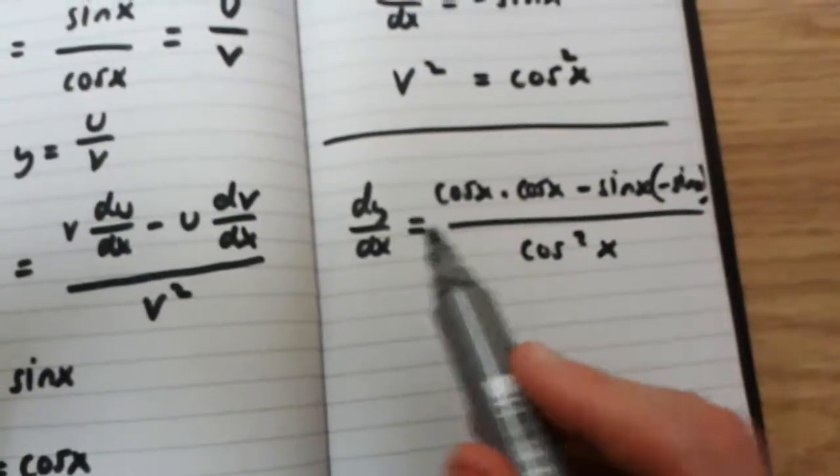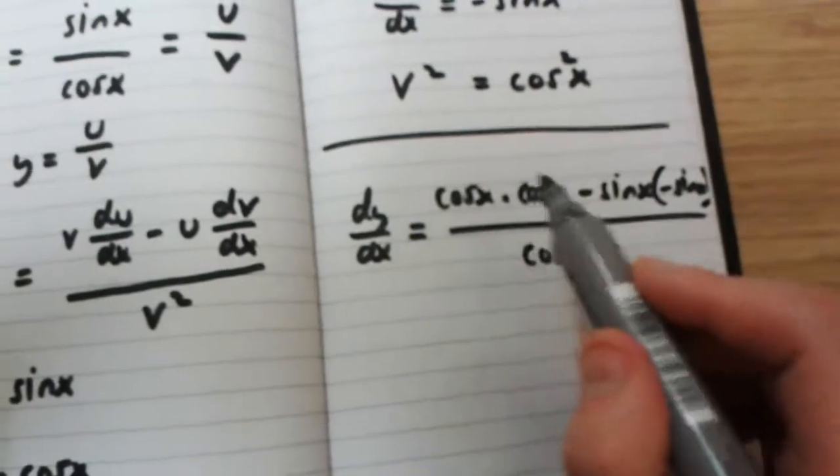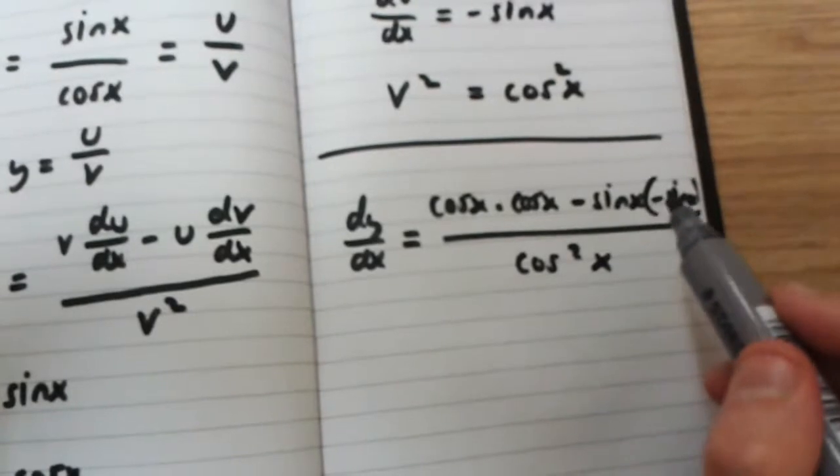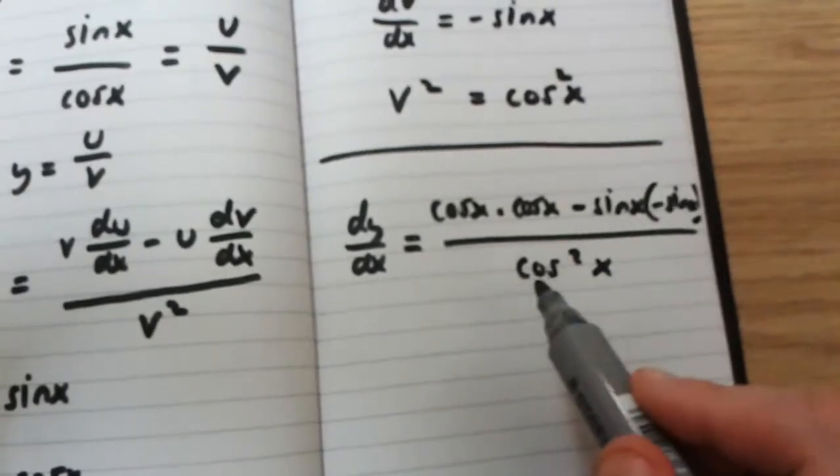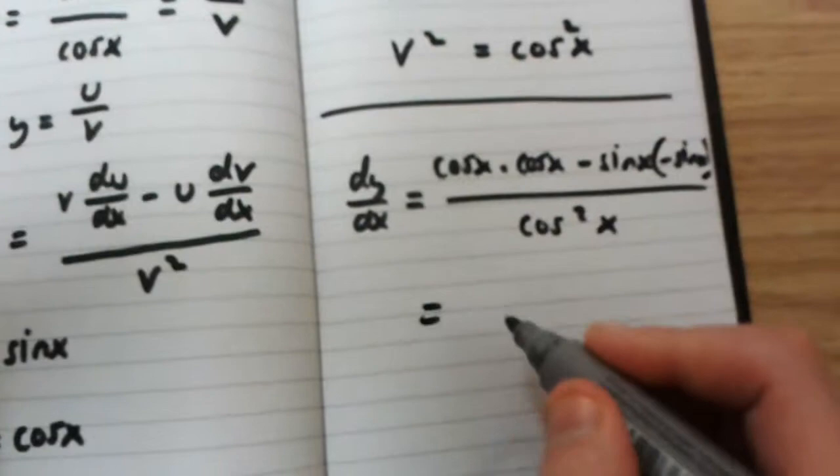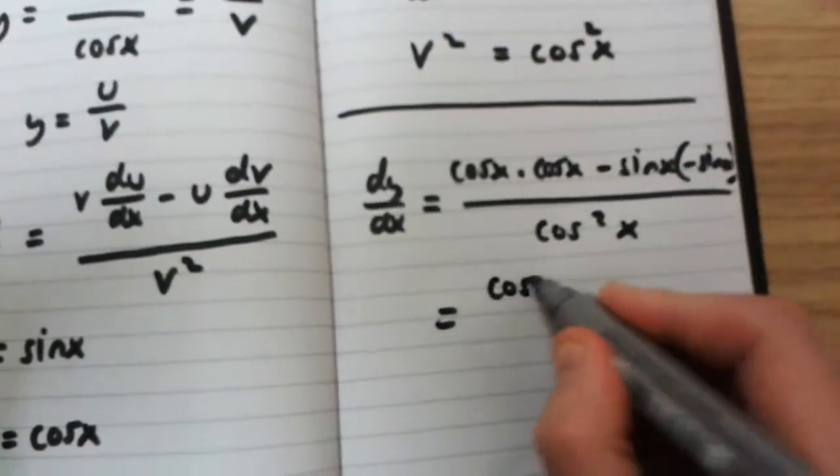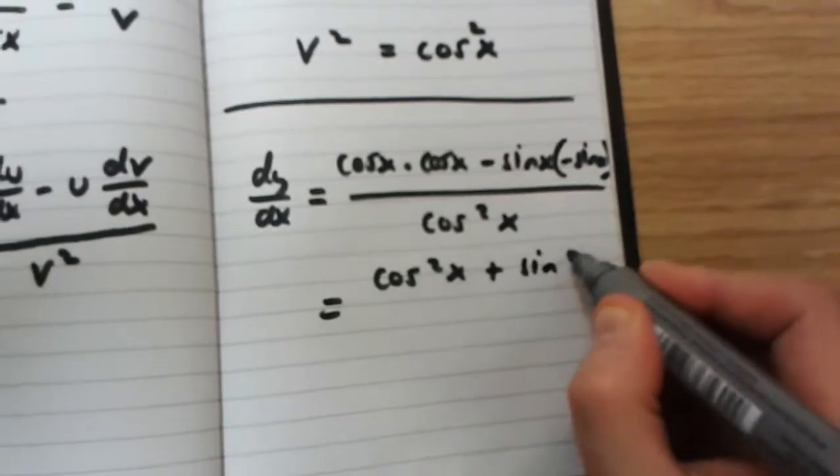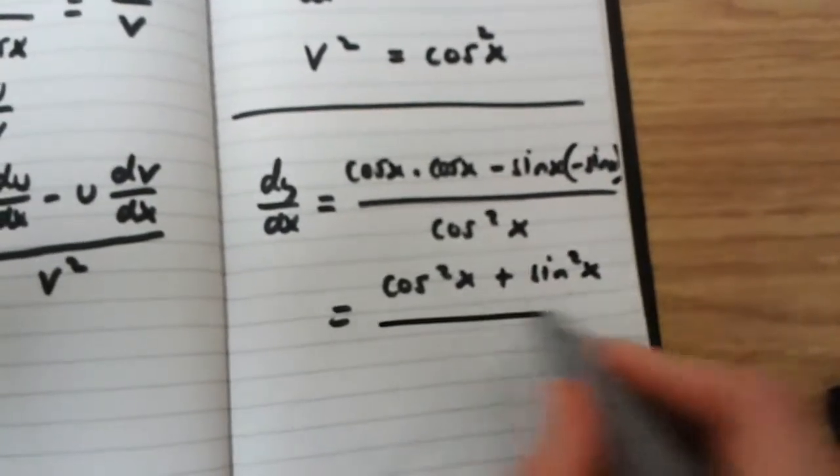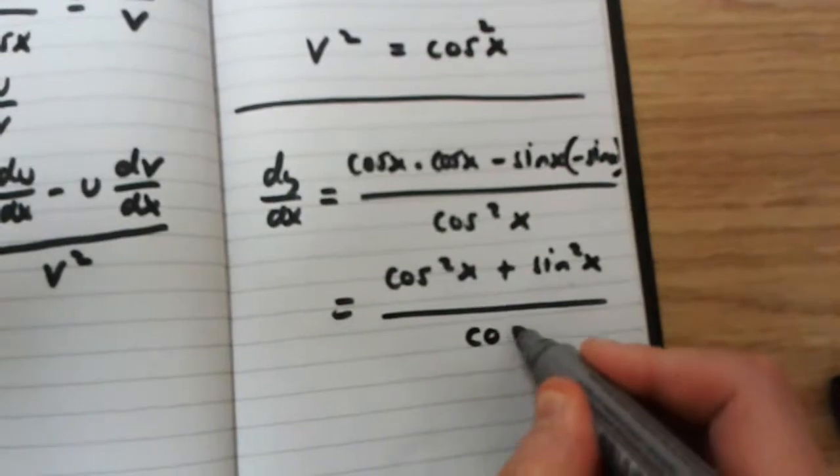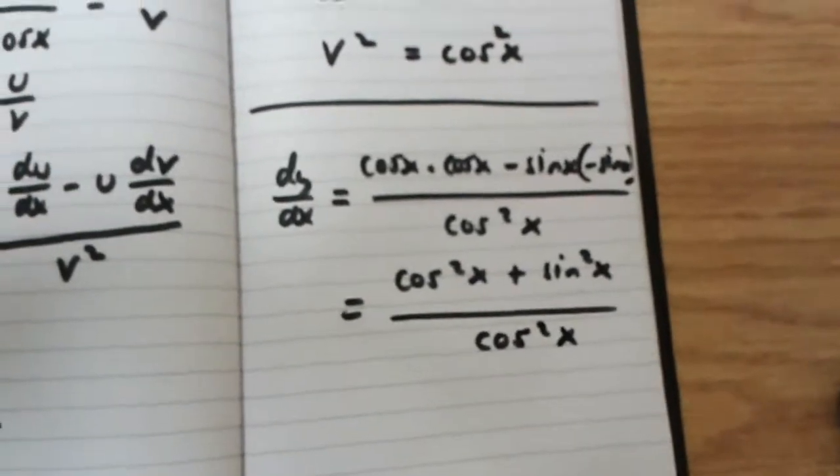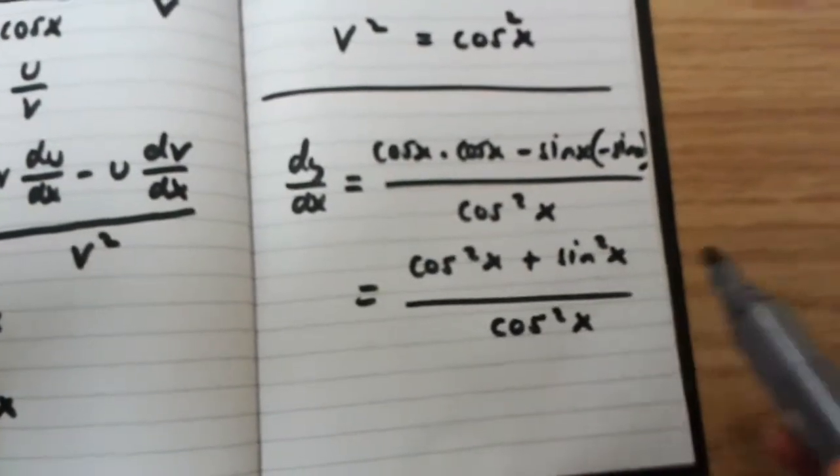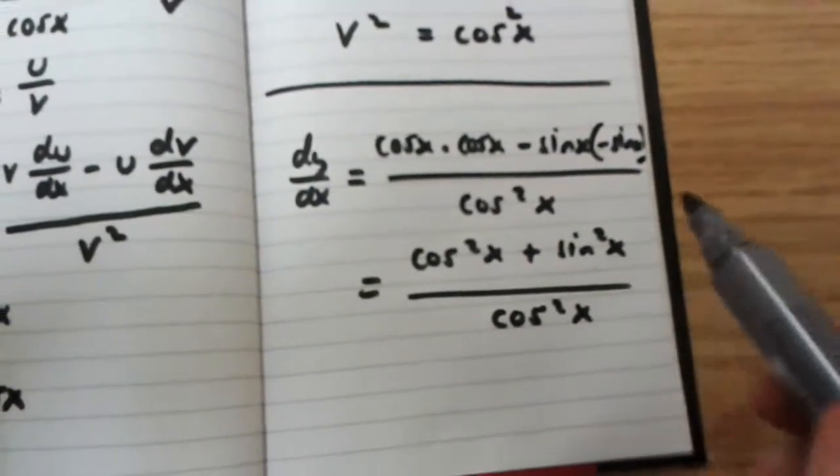So, dy over dx is cos x squared minus sin x multiplied by minus sin x over cos x squared. So, this is equal to cos x squared plus sin x squared over cos x squared. But cos x squared plus sin x squared is actually equal to 1.